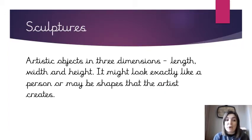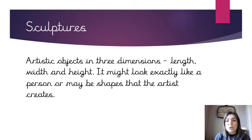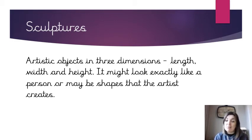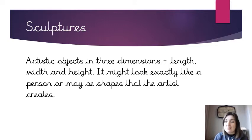Barbara Hepworth produces sculptures, so we're going to be doing something a little bit different in art this half term. Sculptures are 3D objects, so they have a length, a width and a height — three dimensions. It might look exactly like a person or an object, or it might be a shape that the artist creates. That's what we're looking at this half term: sculptures.